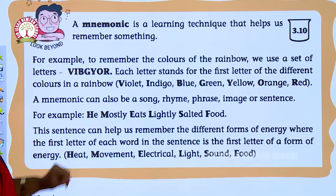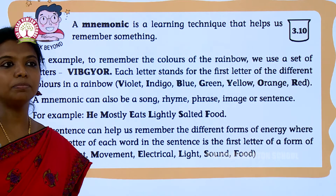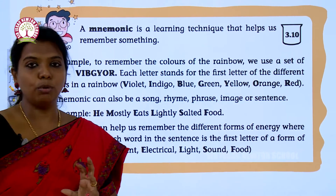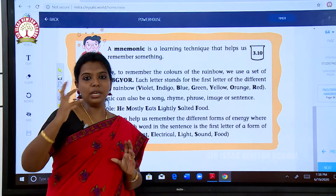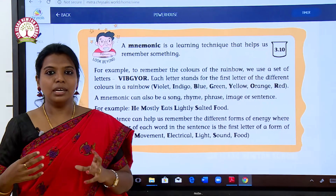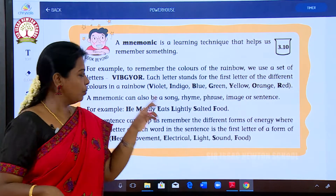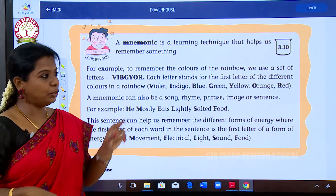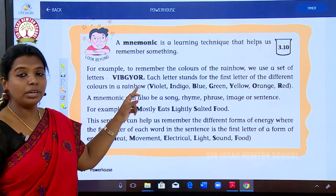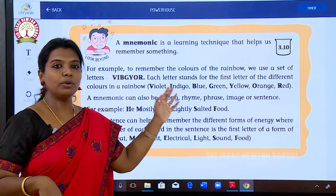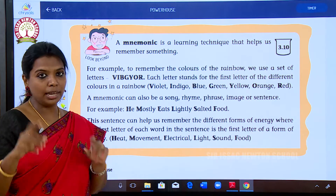The next one is VIBGYOR. You may have seen a rainbow during the rainy season — looking at a rainbow is a very memorable moment. VIBGYOR stands for Violet, Indigo, Blue, Green, Yellow, Orange, and Red — the colors seen in the rainbow. Now we are going to see about light energy.